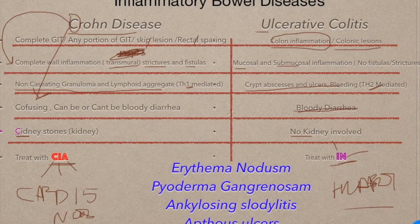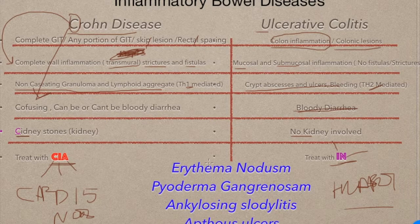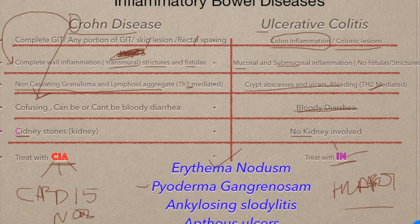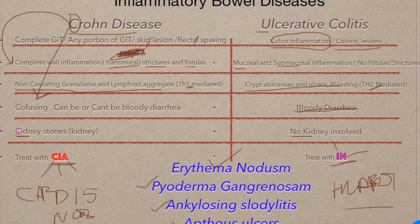Both Crohn's disease and ulcerative colitis share several common features: erythema nodosum, pyoderma gangrenosum, ankylosing spondylitis, aphthous oral ulcers, and uveitis — all present in both conditions.